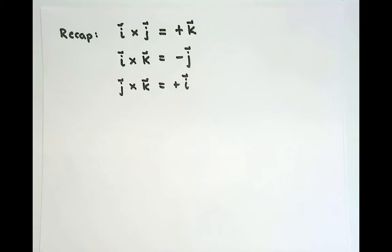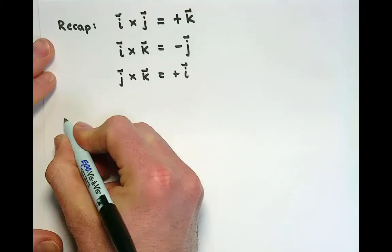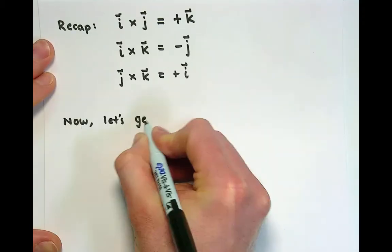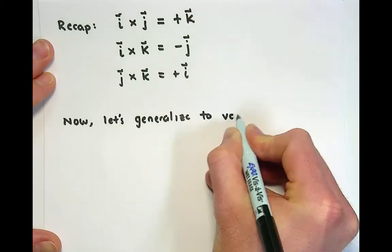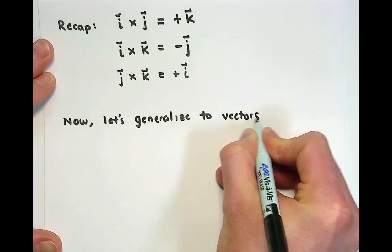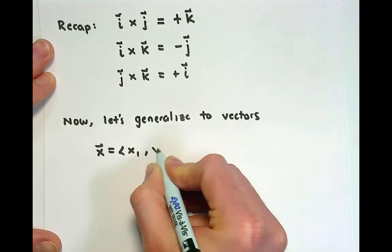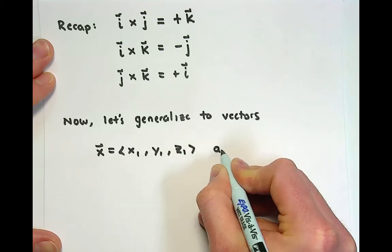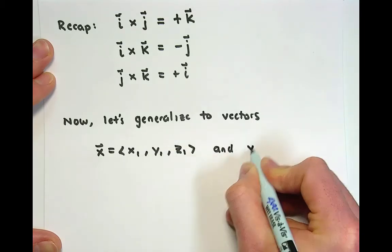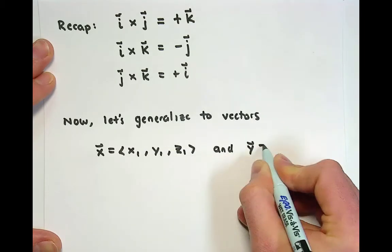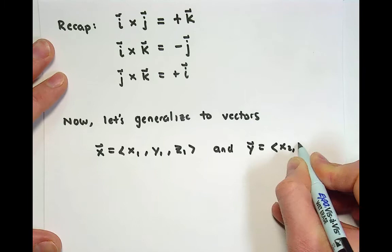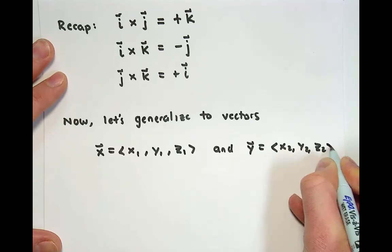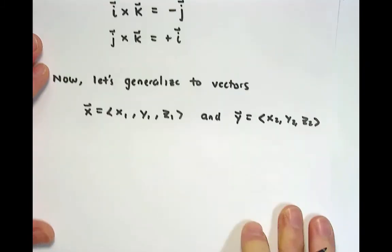We're now ready to move on to the second problem. Let's generalize to vectors x1, y1, z1 and vector y, which is going to be x2, y2, z2.